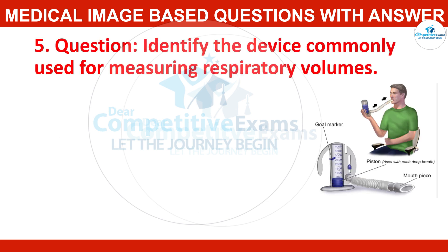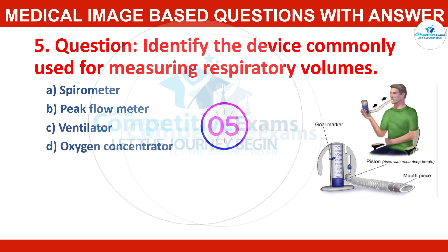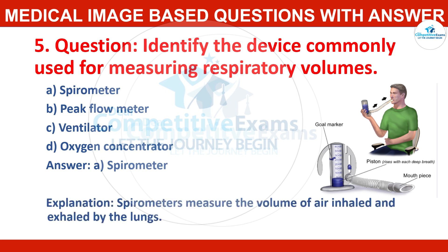Question number five: identify the device commonly used for measuring respiratory volumes. Options: spirometer, peak flow meter, ventilator, or oxygen concentrator. Correct answer: spirometer. Spirometers measure the volume of air inhaled and exhaled by the lungs.